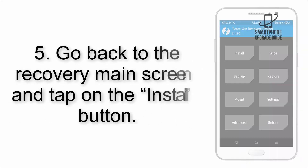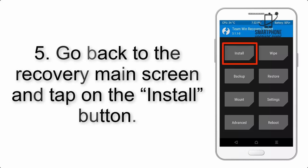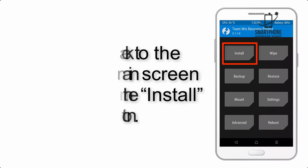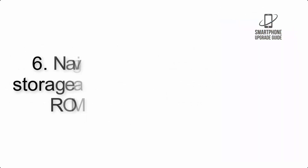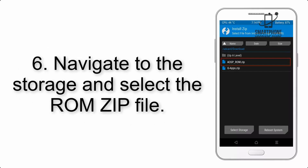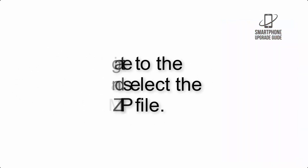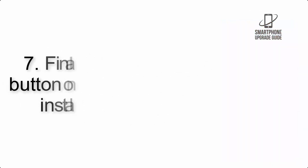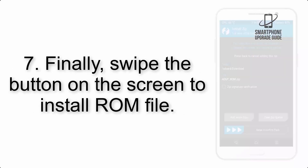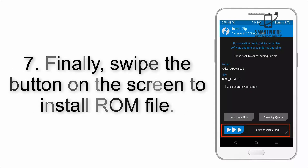Step 4: Swipe the button to wipe the device. Step 5: Go back to the recovery main screen and tap on the Install button. Step 6: Navigate to the storage and select the ROM zip file.